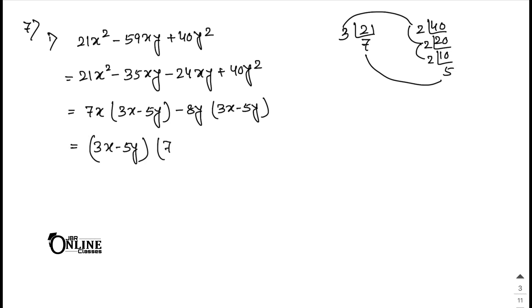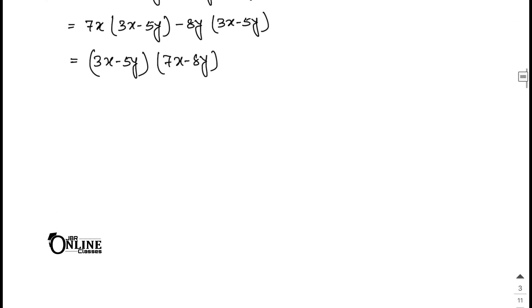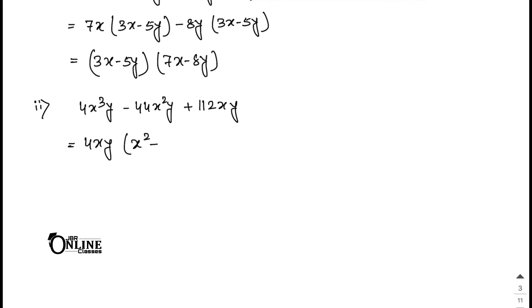Sum number 7.2: 4x³y minus 44x²y plus 112xy. First take out 4xy common: 4xy(x² minus 11x plus 28). Then factorize x² minus 11x plus 28 by middle-term factorization to get (x minus 7)(x minus 4). Final answer: 4xy(x minus 7)(x minus 4).